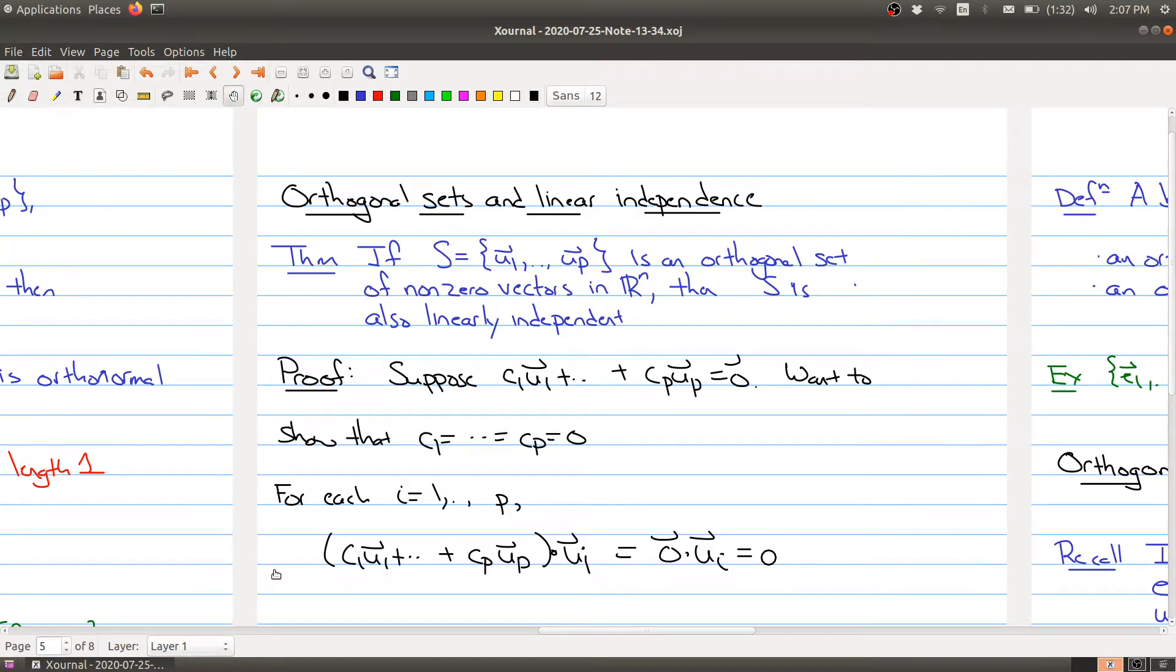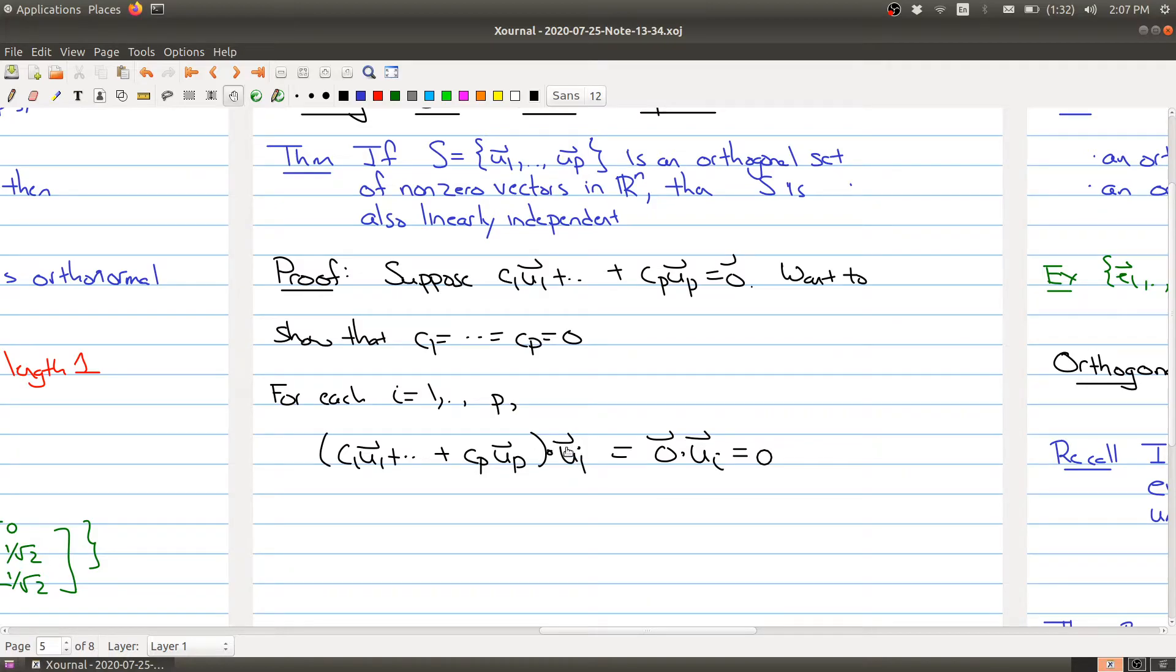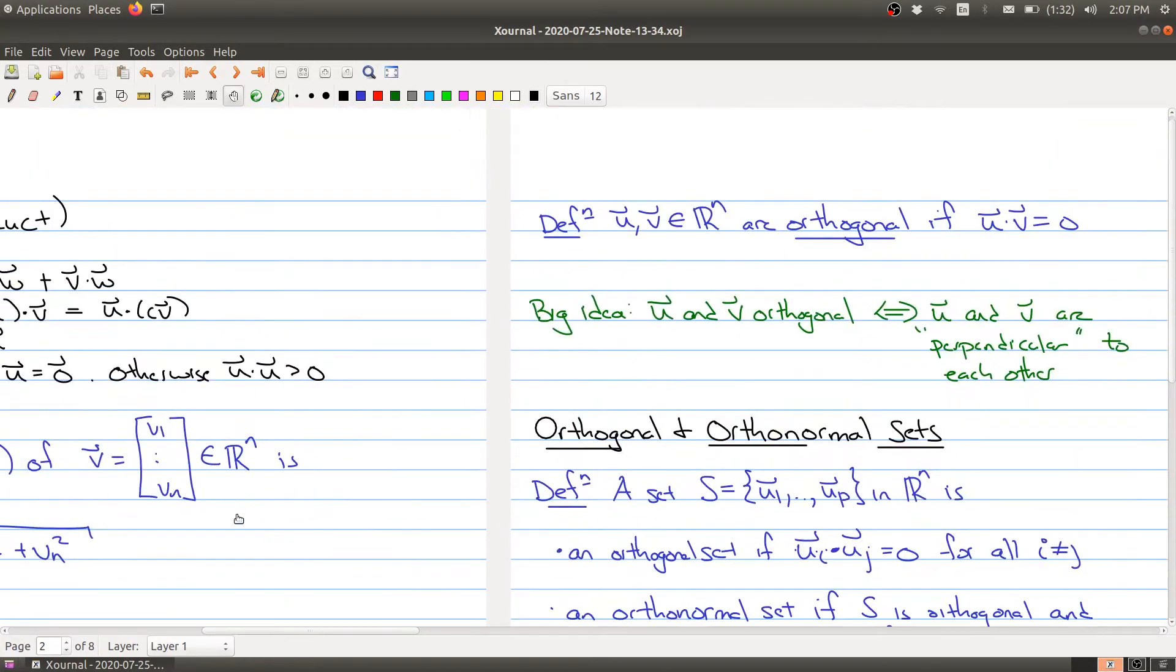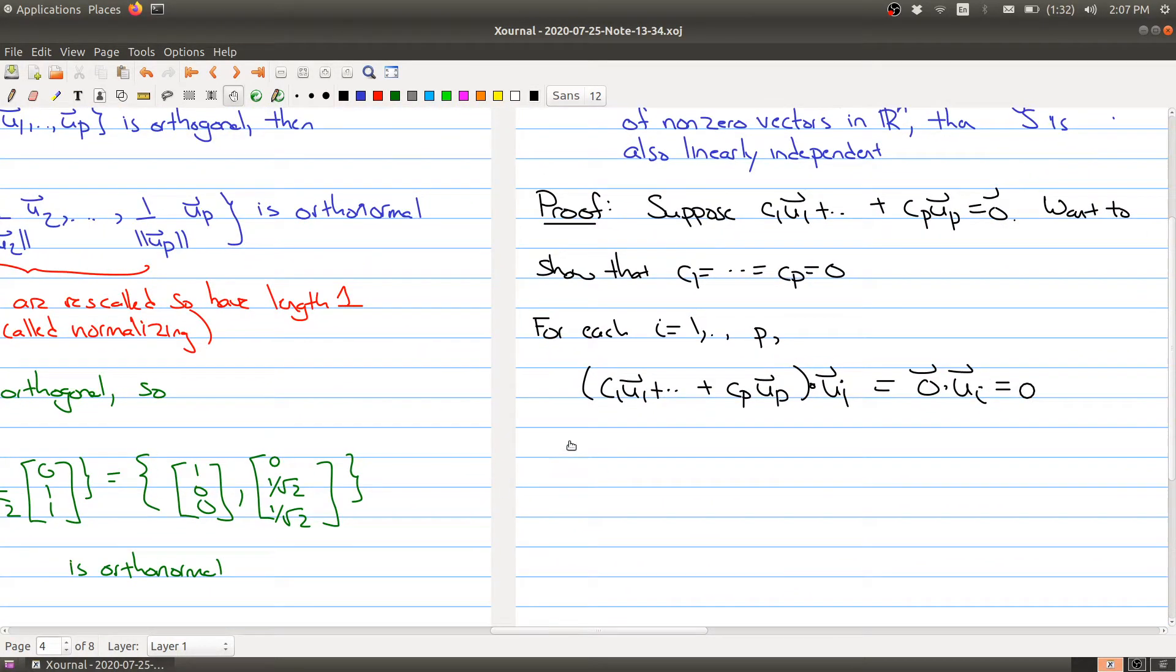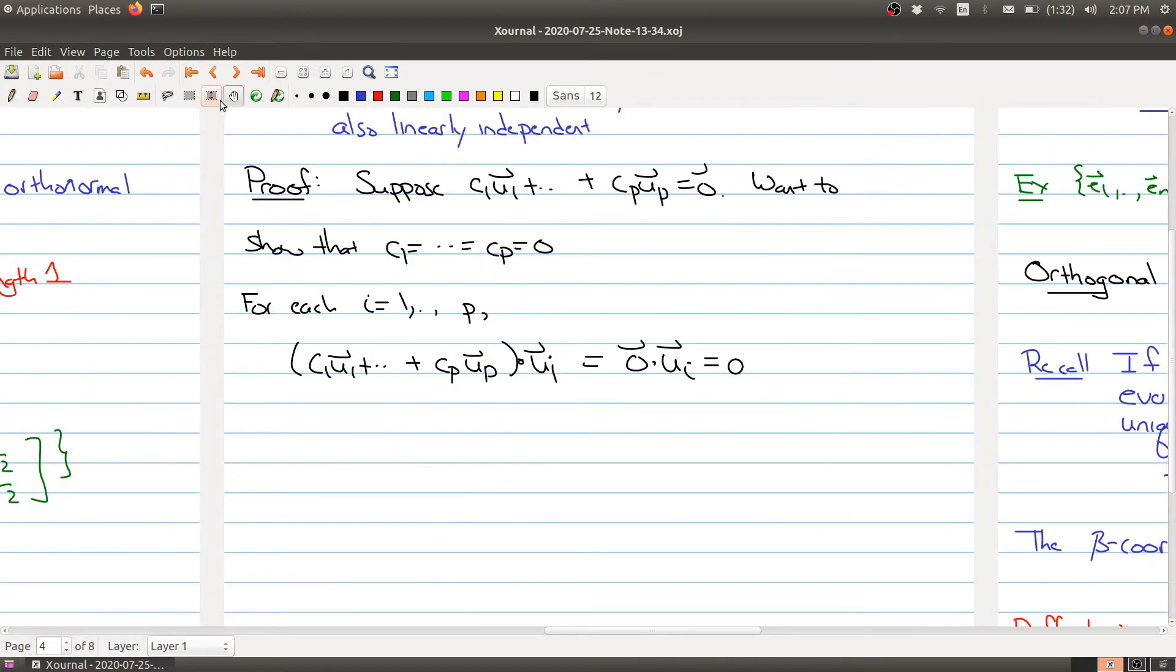So let's look a little bit more closely about what's happening on the left-hand side here. Well, using the properties of the dot product, and let me go to that little result that we had. So using these properties here, you can show that this whole expression on the left-hand side will be equal to the following. So you get c1 u1 dotted with ui, and then you have all the way up to ci dotted with itself, or ci times ui dotted with itself, all the way up to cp up dotted with ui equals to zero.